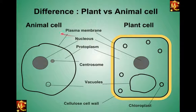All animals have animal cells and all plants have plant cells. Plant cells and animal cells both have many things in common. Both cell types are eukaryotic cells — in the previous video I explained eukaryotic and prokaryotic cells. Plant and animal cells are both eukaryotic, however they have several differences and several similarities.